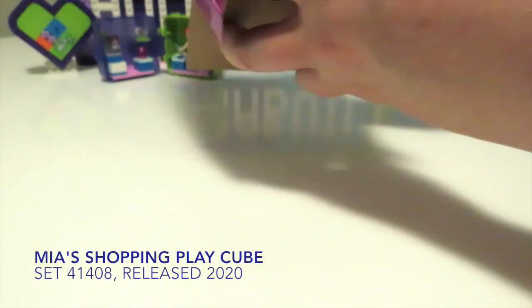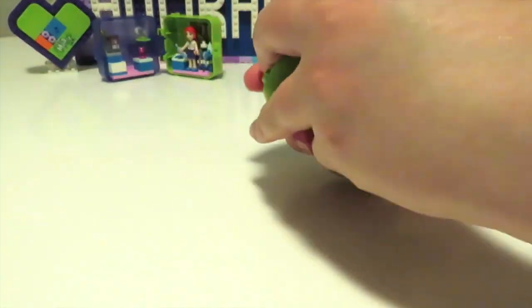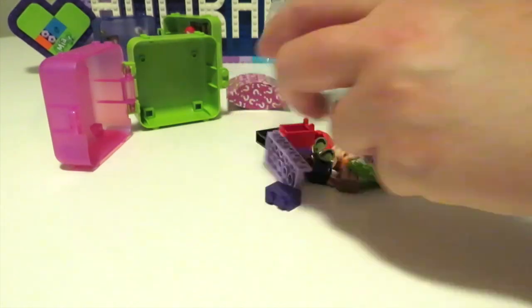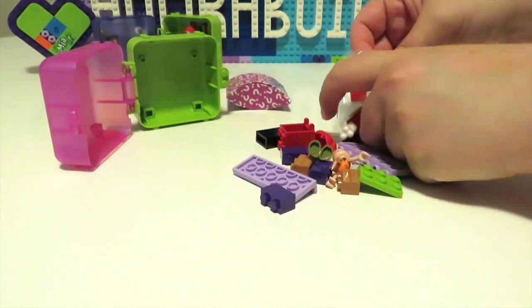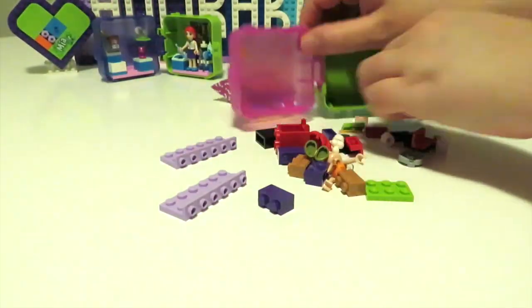Next up we're building Mia's shopping Play Cube which has the lime green and also that fantastic trans pink piece with that sort of blue shift to it. And then we just add in a little sticker up the top with a menu.